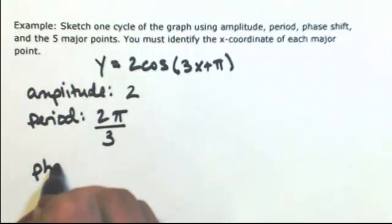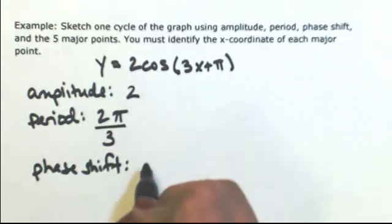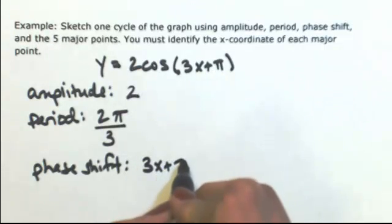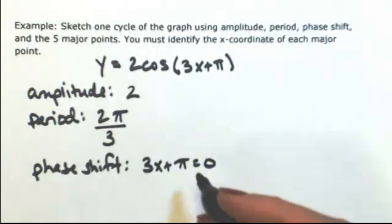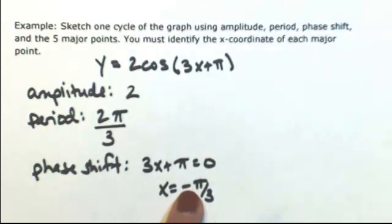Phase shift is found by setting the inside of that function to 0. So x is equal to negative pi over 3, which means that we have a phase shift of pi over 3 to the left.